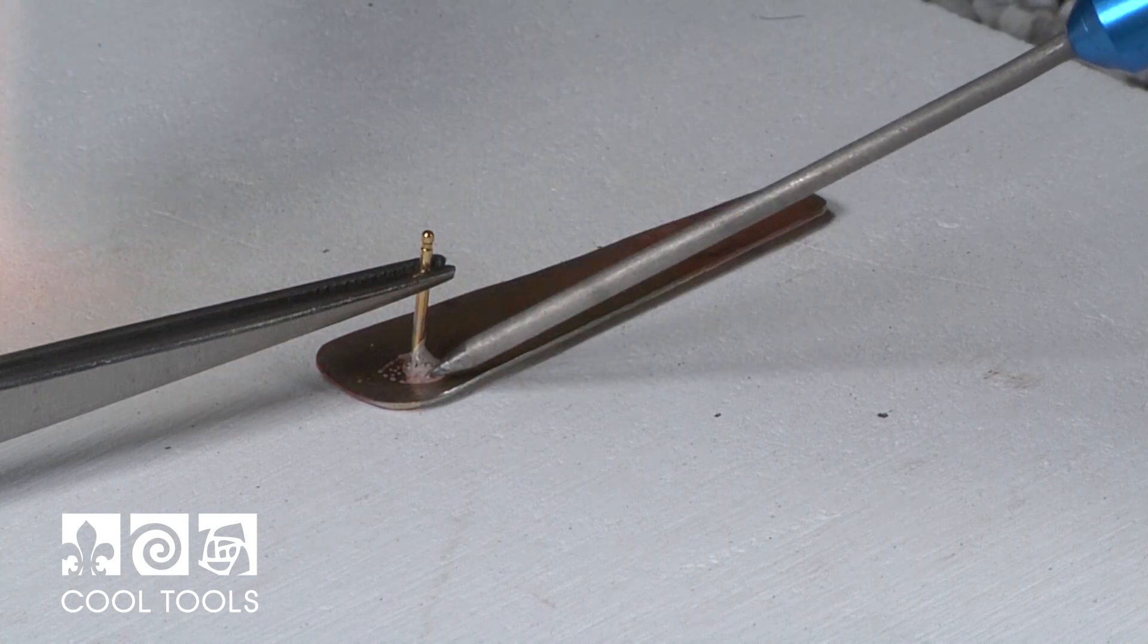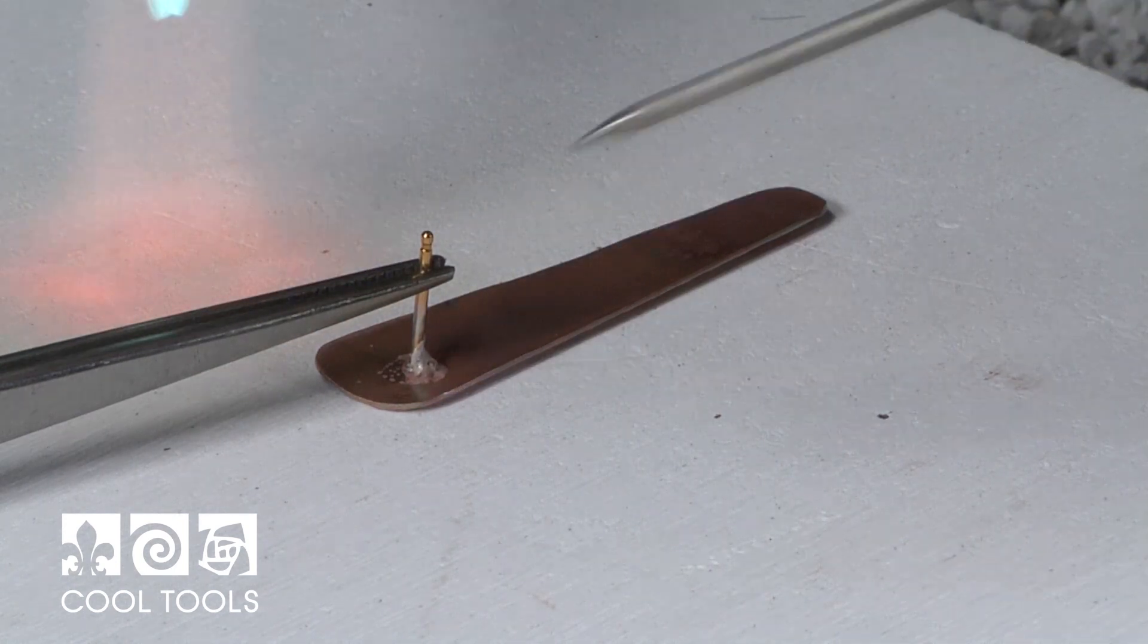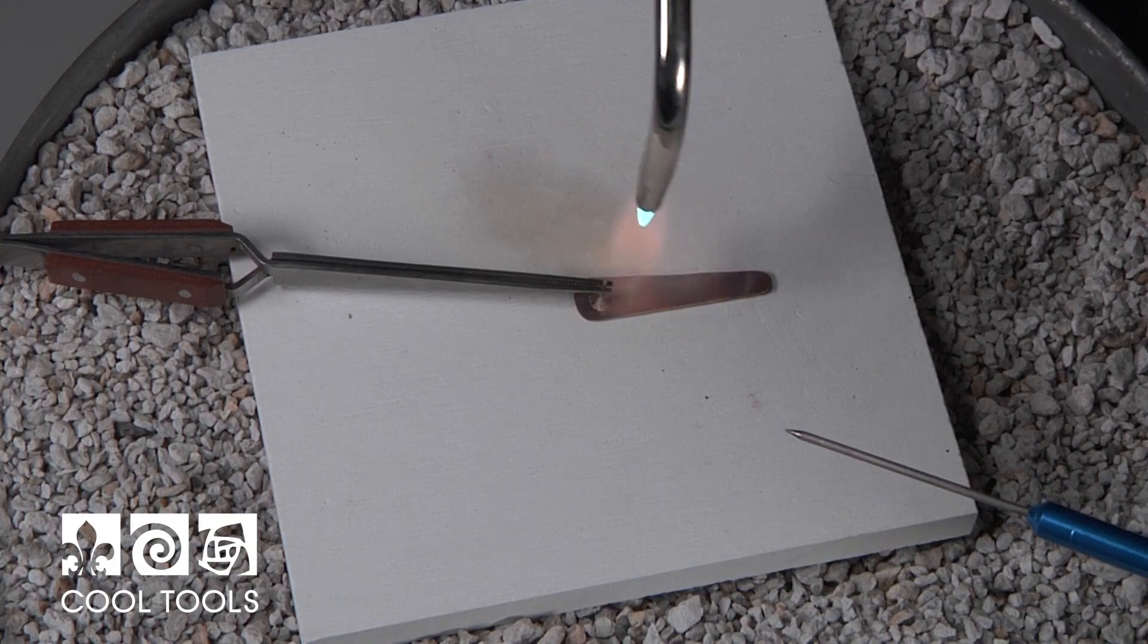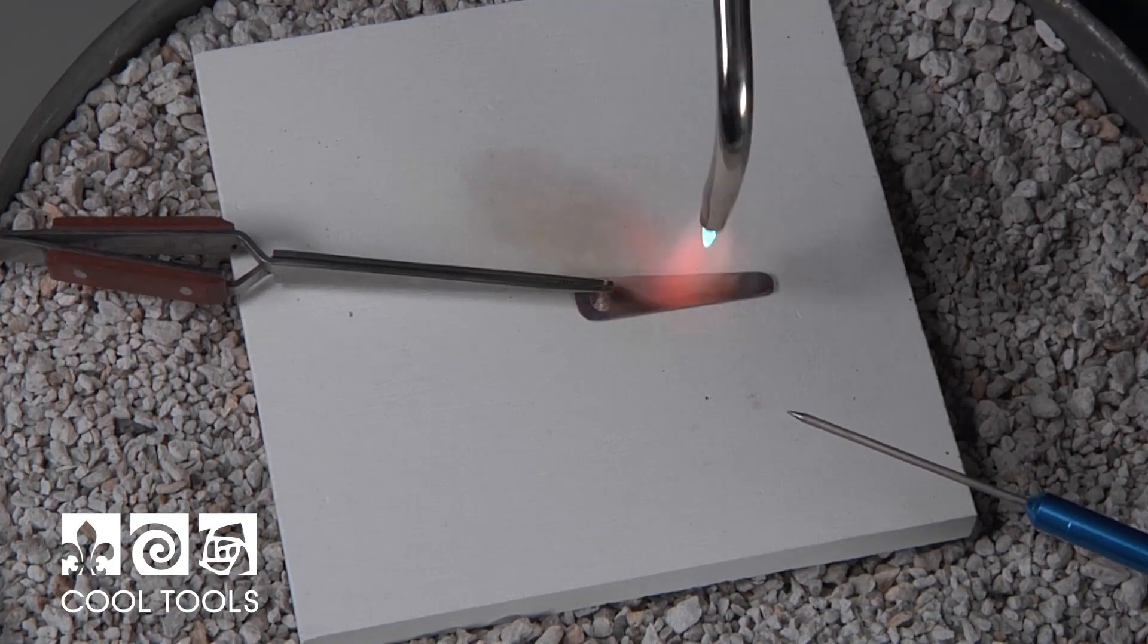So I can see that my solder chip slid away, boiled away with the flux and I'm going to move it back so that it's touching both my post and my earring back and continue to heat.